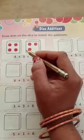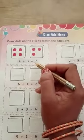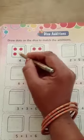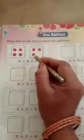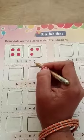We have to add the dots on the dice. Like 1, 2, 3, 4 - 4 dots on the dice. And it's 3. So 4 and 3, we call it 7.